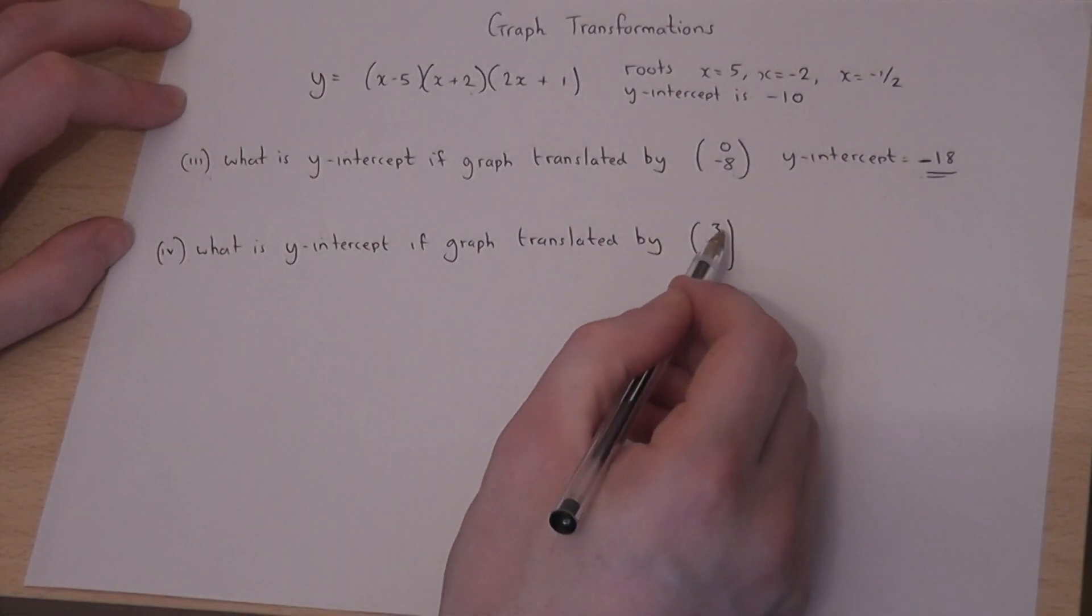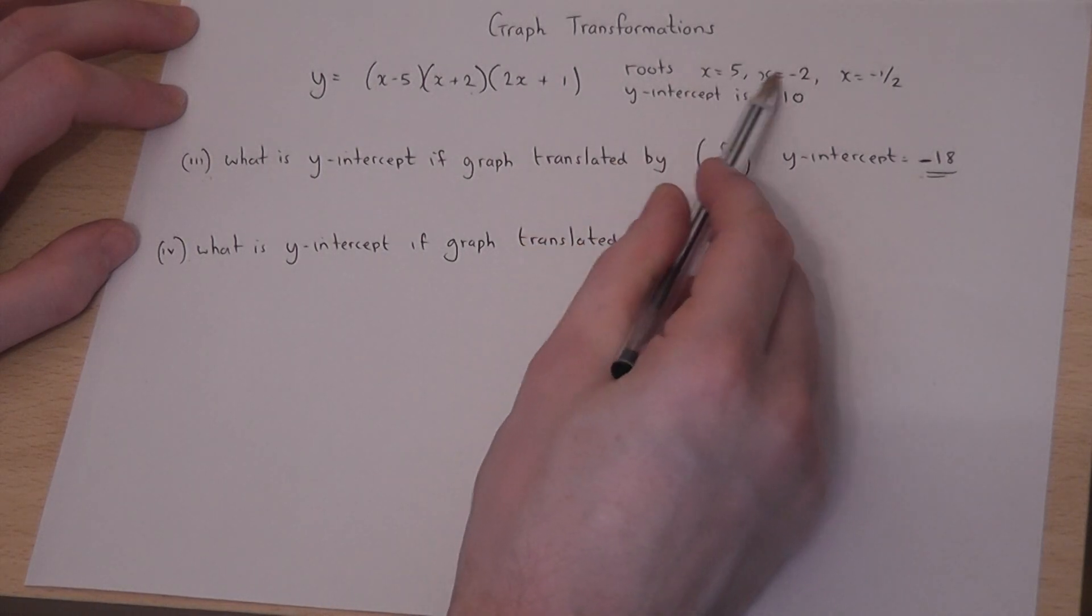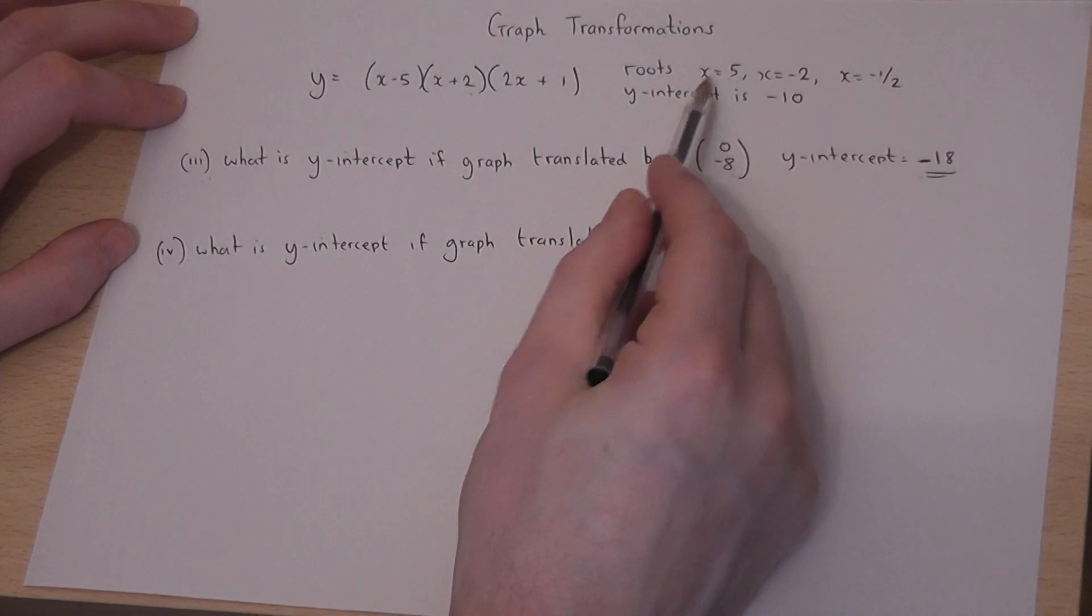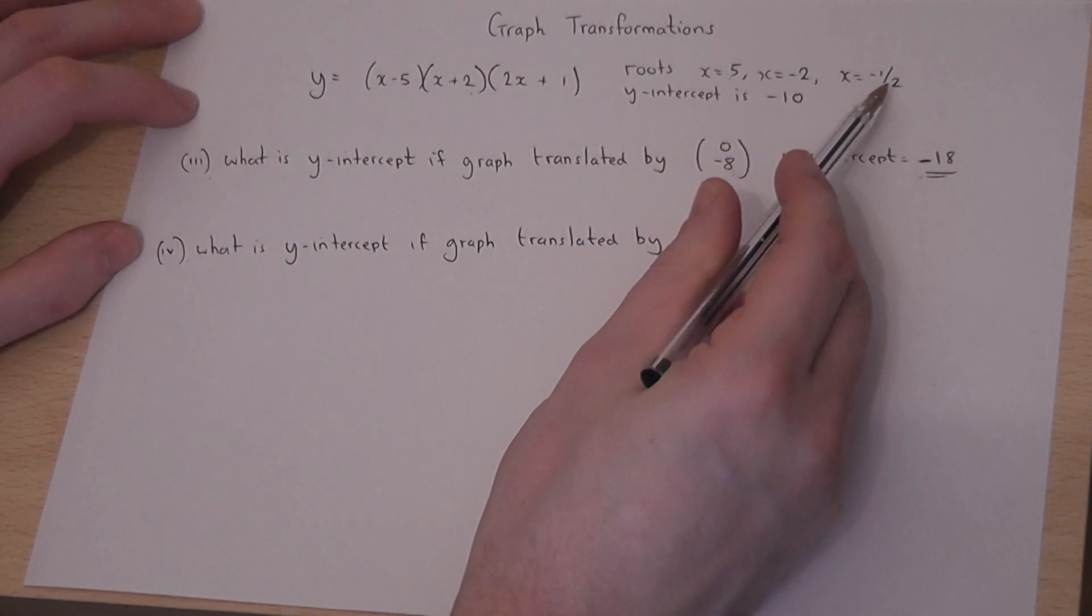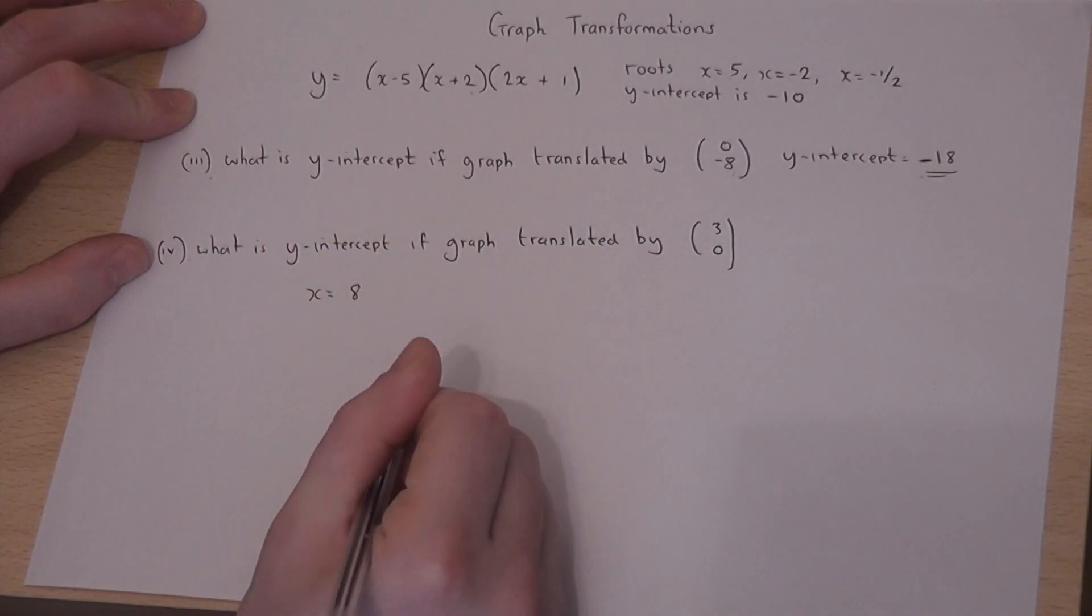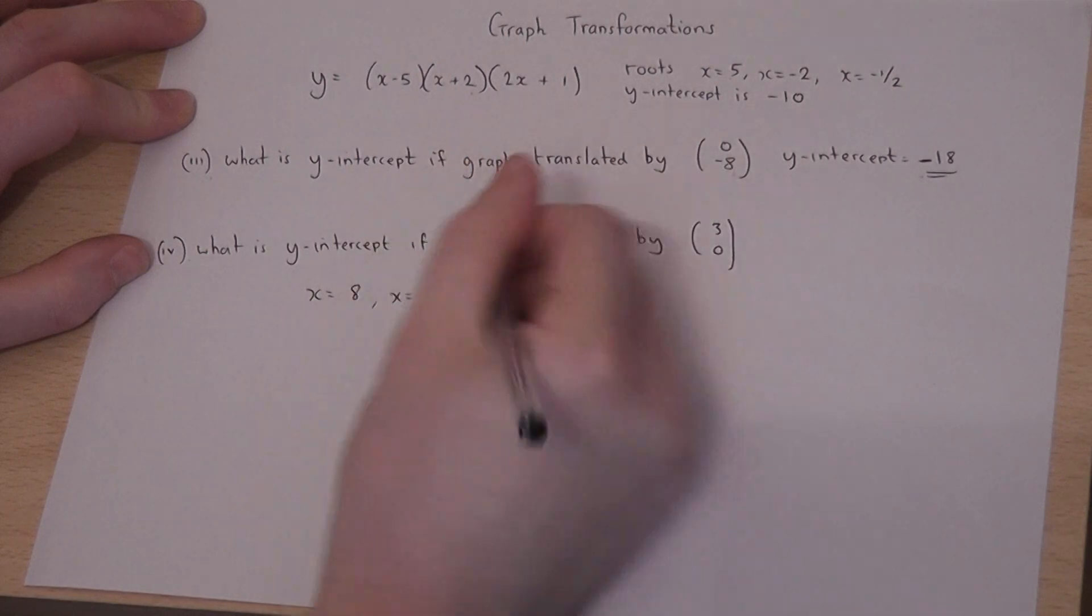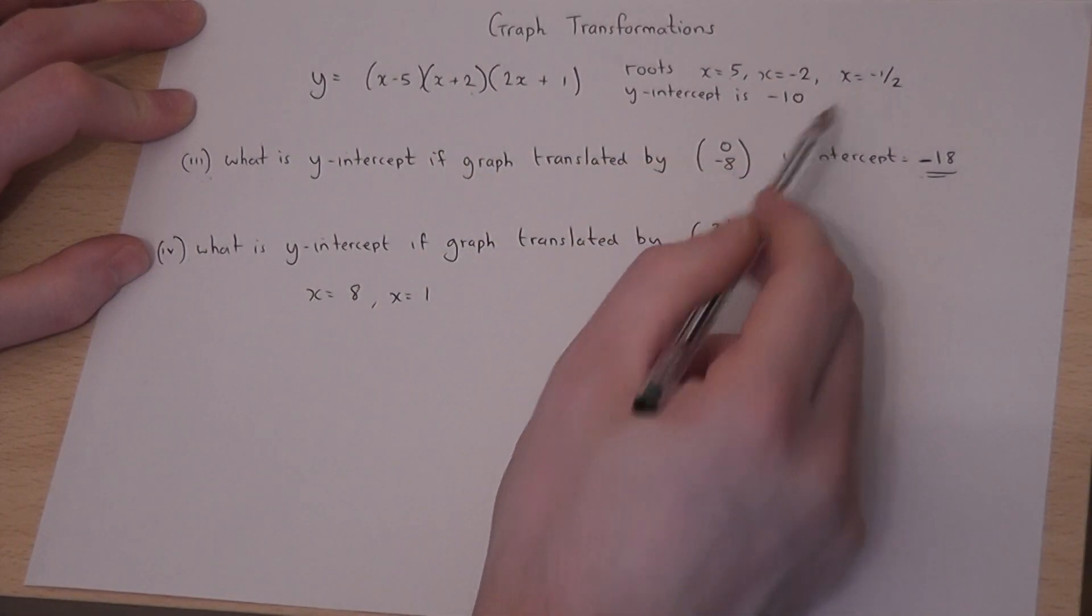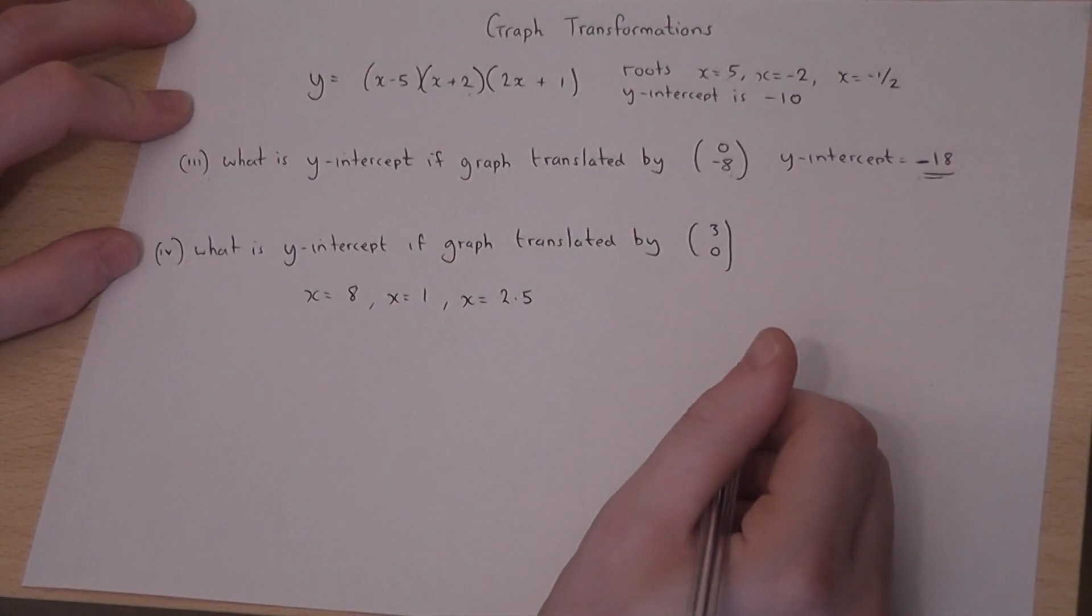It's a horizontal translation. What this means is that each of the roots must have moved to the right by 3. So rather than 5, -2, -1/2, the new roots must be 8 (i.e., 5+3), 1 (-2+3), and also -1/2+3 will be 2.5. So therefore I can find the new equation quite quickly.